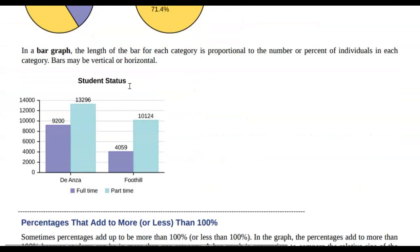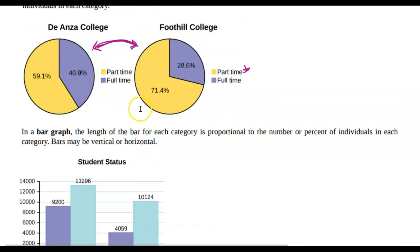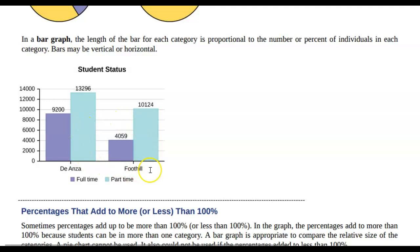All right, another type of graph that you might want to look at is a bar graph. Now in this bar graph, we did use the frequencies versus the relative frequencies. Here you can see number of enrollment students. So you can see that overall De Anza is going to have more students. And you can look at the relative frequency difference. But what you can't see in this is actual percentages.